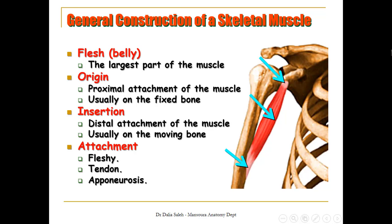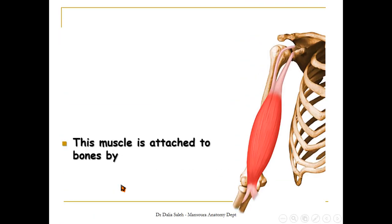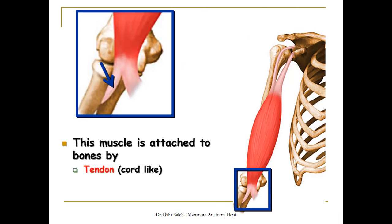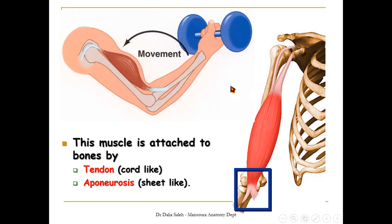The attachment of a muscle, either at its origin or insertion, can be one of three types: direct fleshy attachment, where muscle fibers attach directly to the bone; by tendon, which looks like a cord; or by aponeurosis, where the tendon is spread like a sheet. Upon contraction, the fleshy part contracts and pulls the insertion towards the origin, leading to the action.